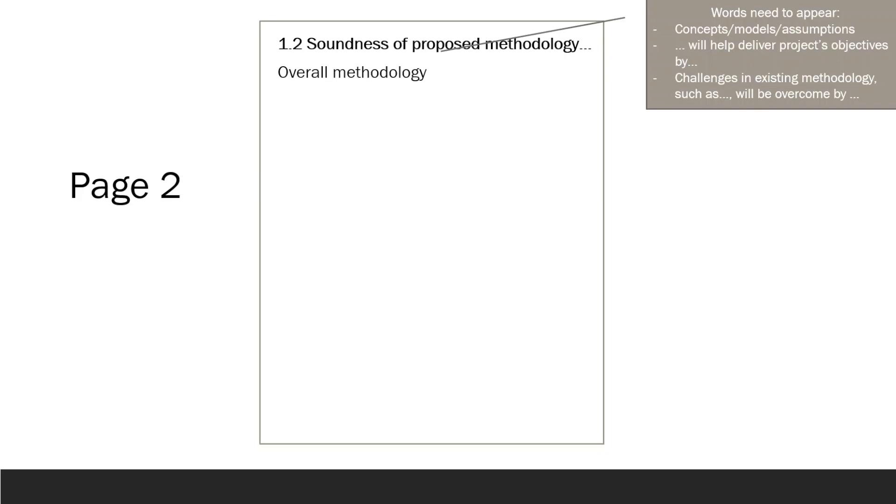The second page can be utilized for the first four sections of Part 1.2, Soundness of the Proposed Methodology. In the Overall Methodology section, describe the concepts, models, or assumptions being tested. Explain how these methods are related to the research and innovation objectives discussed on the first page. Provide an example of a novelty introduced in your methodology and explain how this novelty helps overcome a specific challenge.